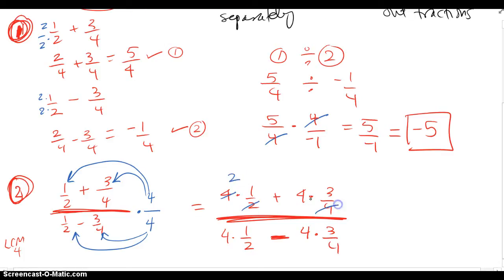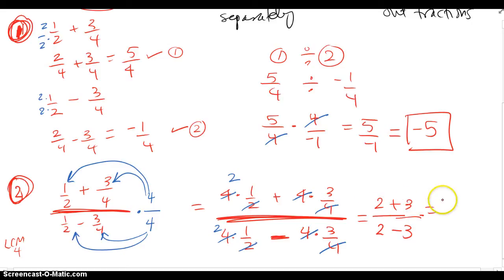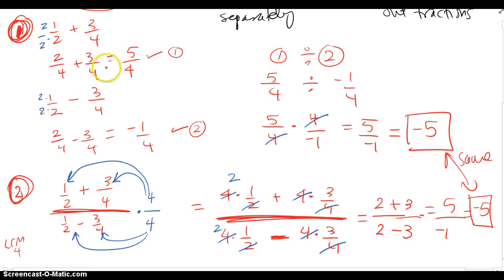This turns into a two, this denominator is gone, and the other denominator is gone completely. I end up with two plus three on top, and two minus three in the bottom, which gives me five over negative one — negative five. So whether I use Method 1, treating numerator and denominator separately, or Method 2, treating them all together, I still get the same answer.